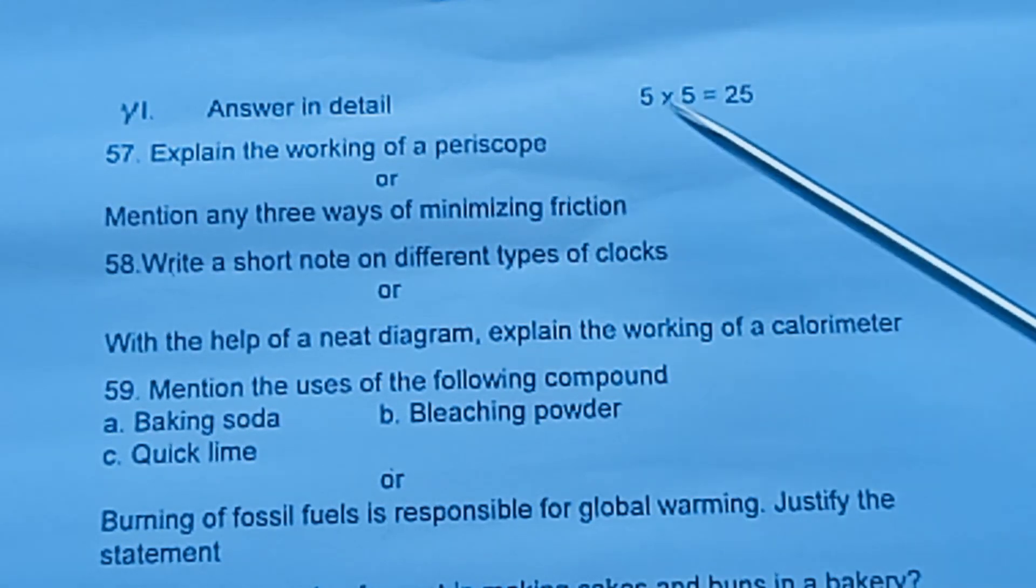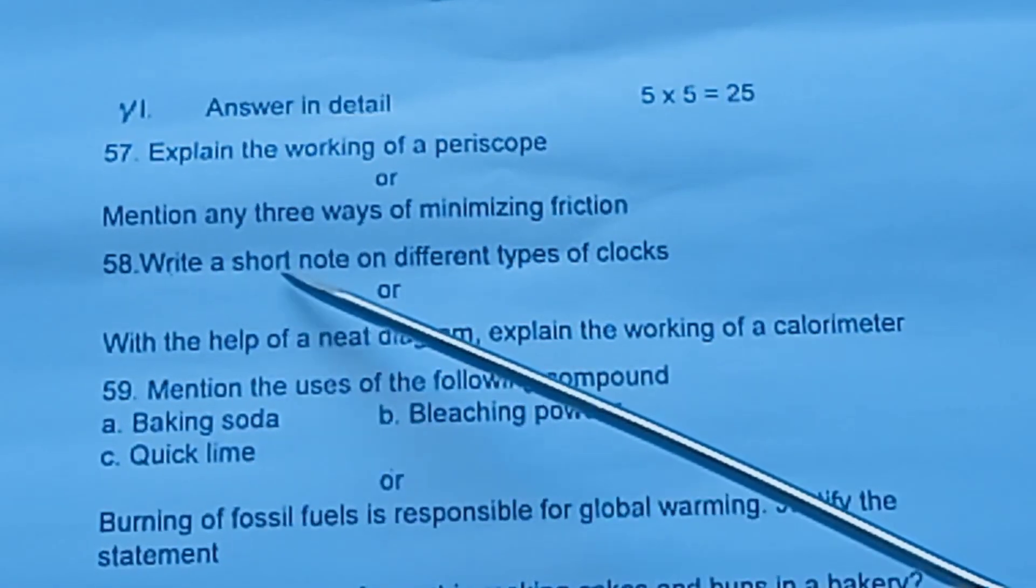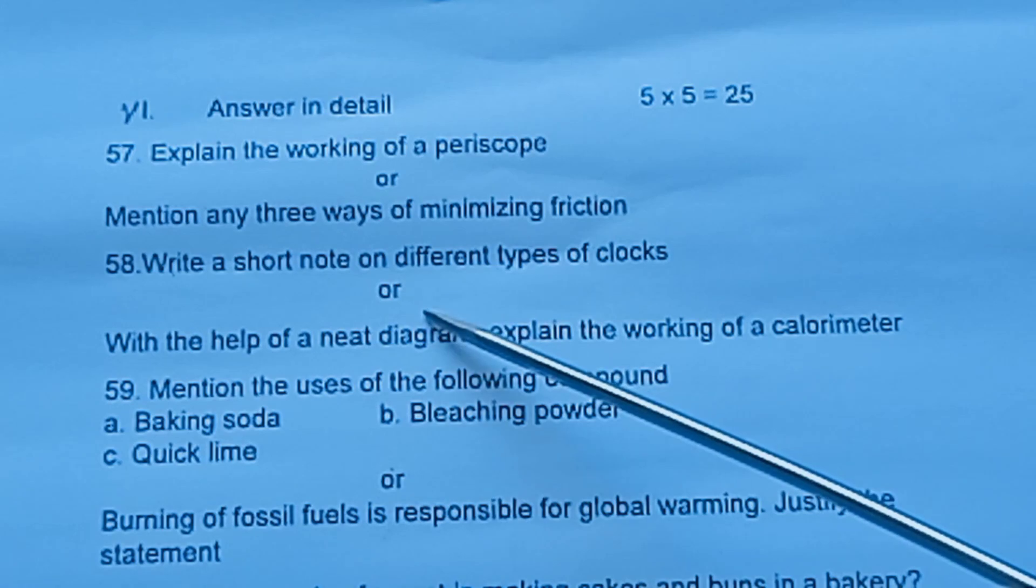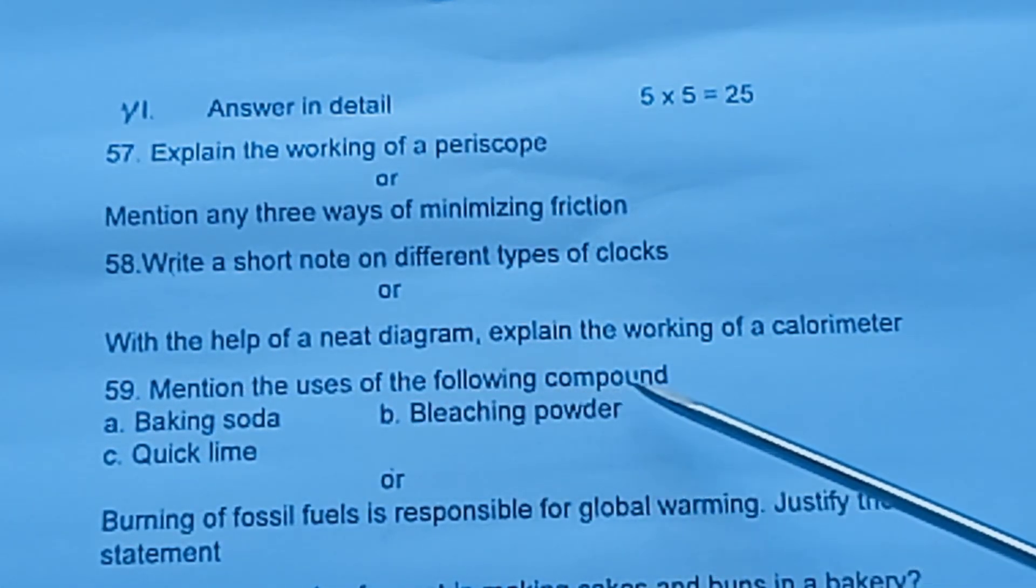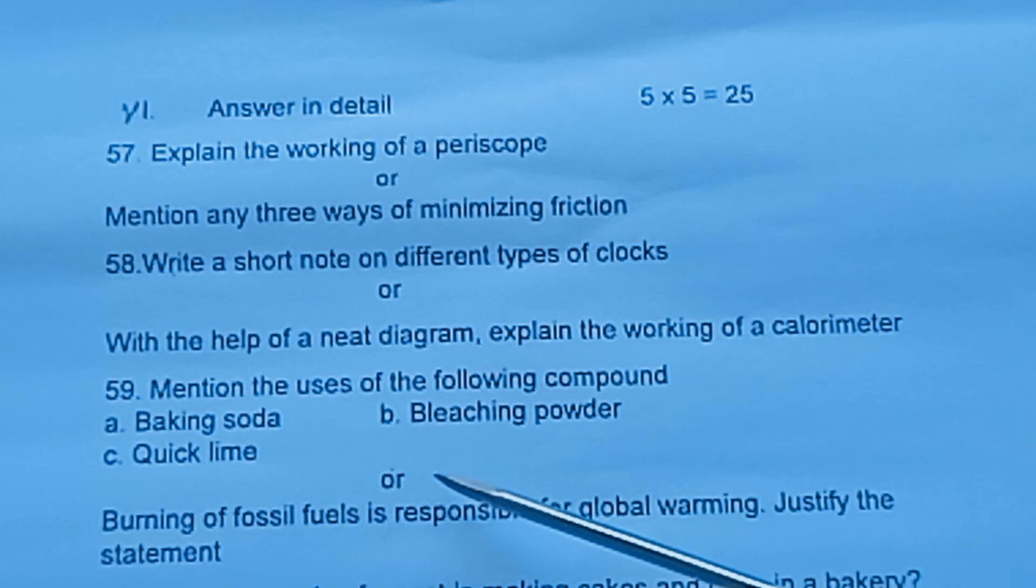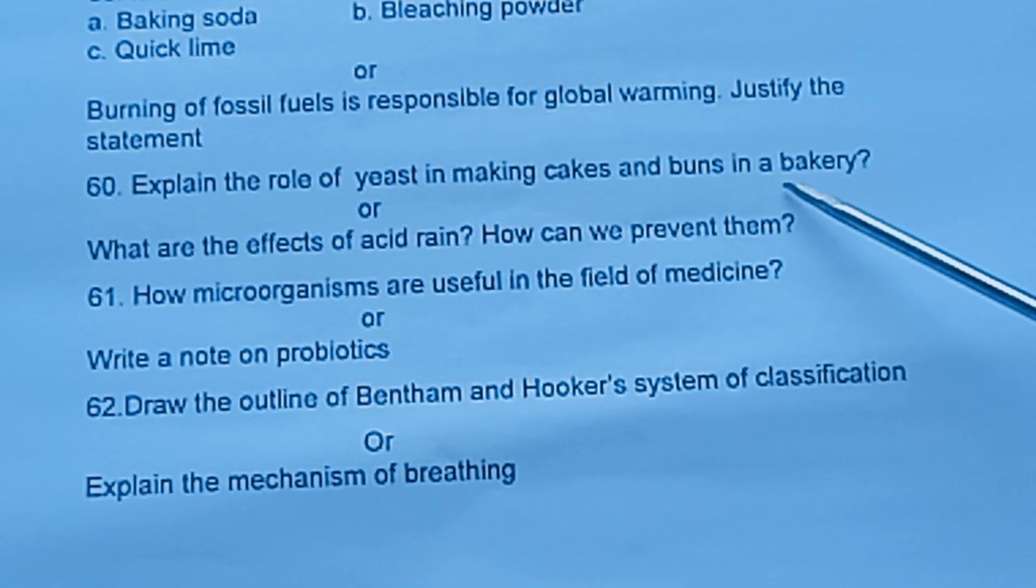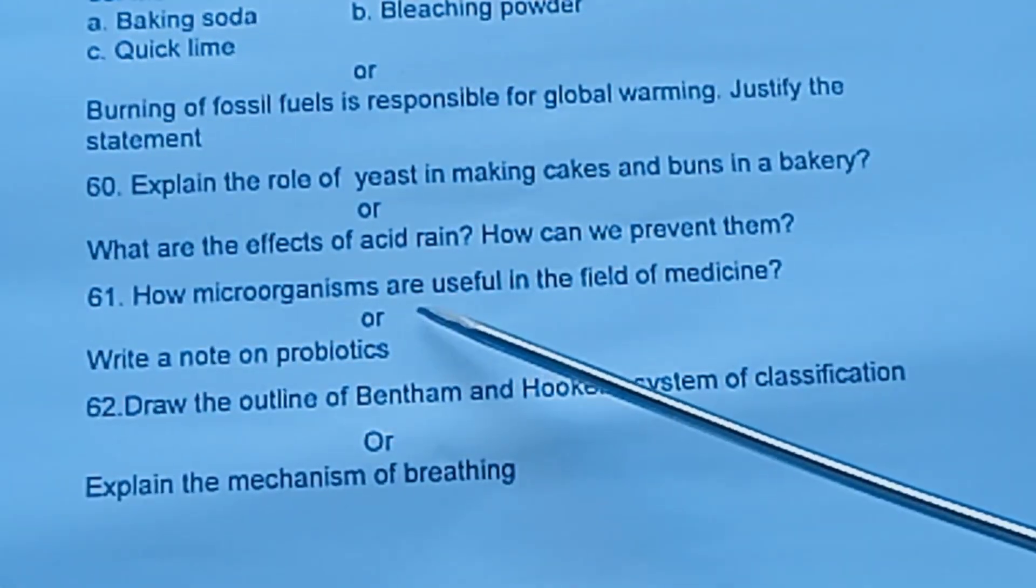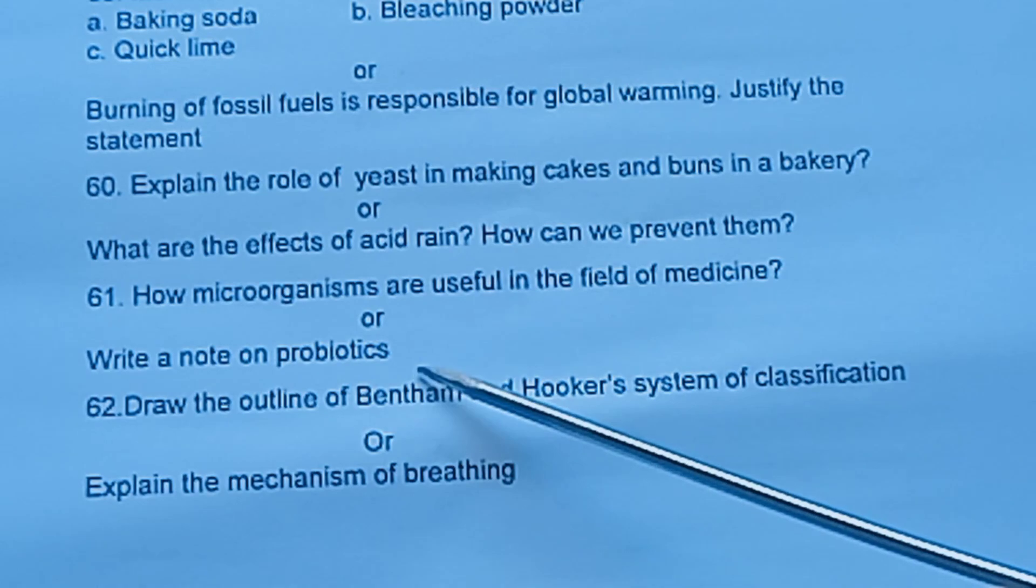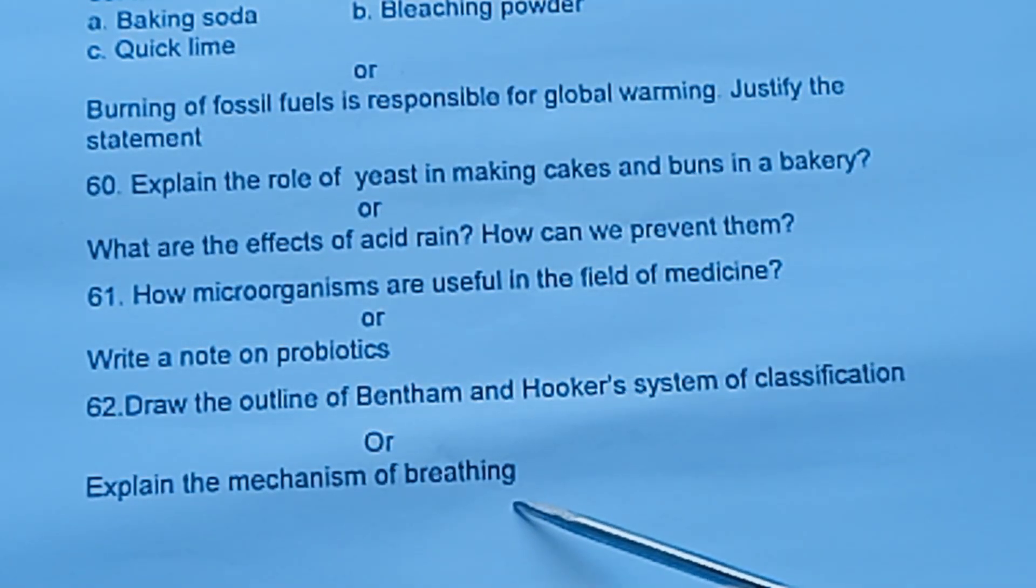Formula 6: Answer in detail. 5 into 5 is equal to 25. Question 57: Explain the working of a periscope or mention any three ways of minimizing friction. Question 58: Write a short note on different types of clocks or with the help of a neat diagram explain the working of a calorimeter. Question 59: Mention the uses of the following compounds - baking soda, bleaching powder, quicklime, or burning of fossil fuels is responsible for global warming, justify the statement. Question 60: Explain the role of yeast in making cakes and buns in a bakery or what are the effects of acid rain, how can we prevent them? Question 61: How microorganisms are useful in the field of medicine or write a note on probiotics? Question 62: Draw the outline of Bentham and Hooker system of classification or explain the mechanism of breathing. All the best.